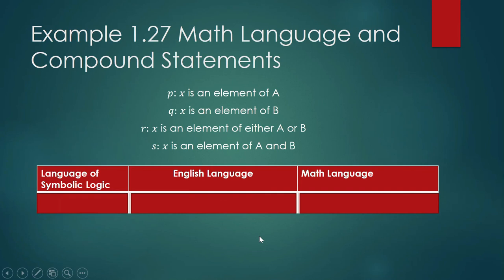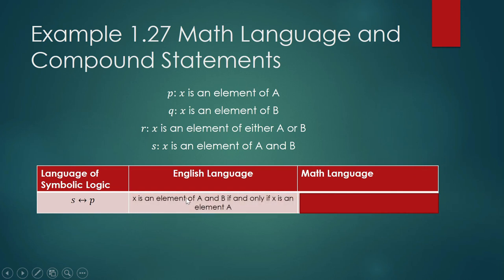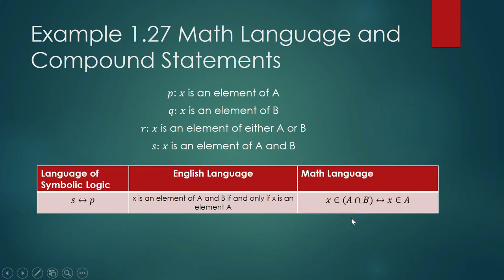Another example: s ↔ p in symbolic logic. In plain English: 'x is an element of A and B if and only if x is an element of A.' In math language: x ∈ A ∩ B if and only if x ∈ A. We can remove the parentheses and write it in this improved form.